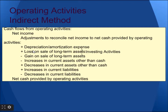Here we can see the operating activities in the indirect method — what to add and what to subtract. The golden rule is to always start with net income. For assets, follow the rule: increase-decrease or decrease-increase. Whenever an asset decreases, cash is increased; whenever an asset increases, cash is decreased. For liabilities, follow increase-increase, decrease-decrease: whenever current liability increases, cash increases; whenever current liability decreases, cash decreases.